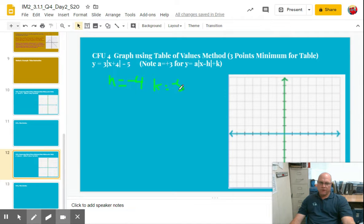All right, so what's our vertex? That's right. It's negative 4 comma negative 5. Let's plot that. So I'm going to go left 4: 1, 2, 3, 4, down 5: 1, 2, 3, 4, 5.